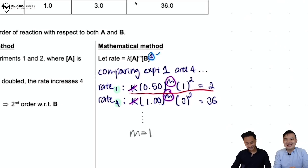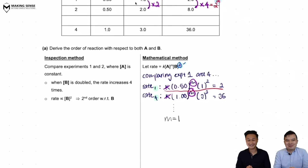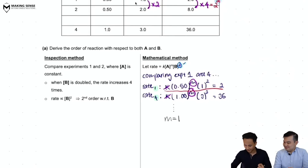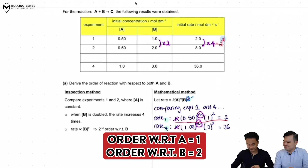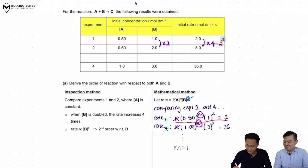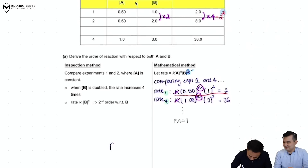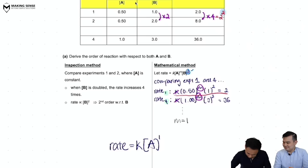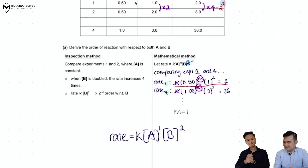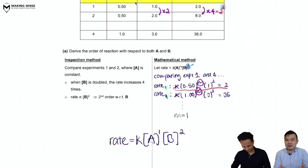So to conclude: the order with respect to A is 1, and the order with respect to B is 2. The rate equation is therefore: rate = K[A]¹[B]². This is a very typical exam question and you must be proficient at both the inspection and mathematical methods.